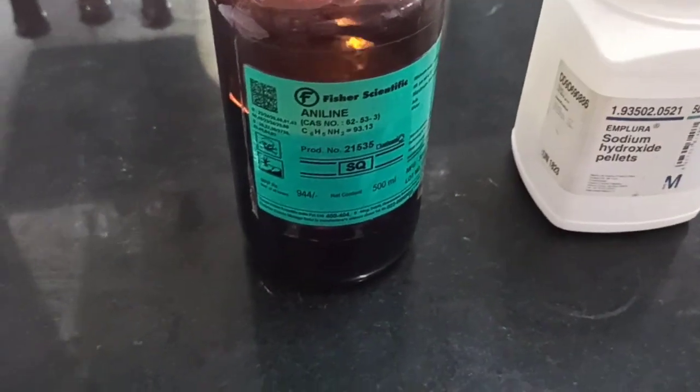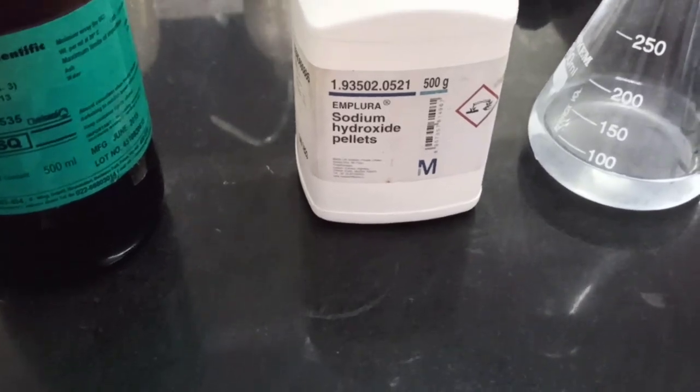Now we will discuss the chemicals required for the synthesis of benzanilide and the glassware required. We need aniline, and then we need sodium hydroxide.